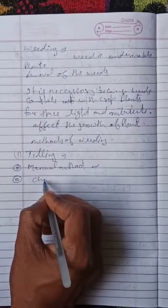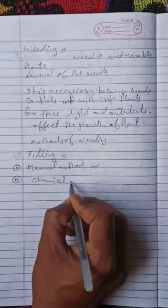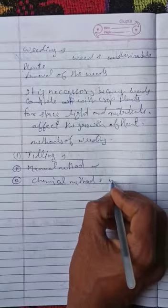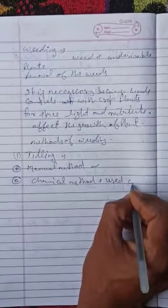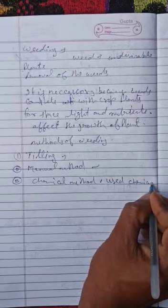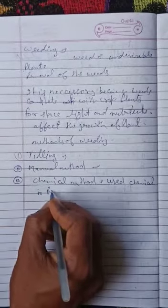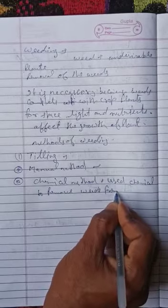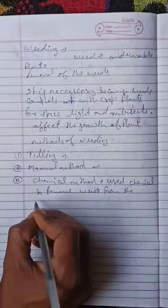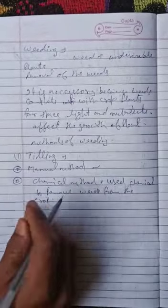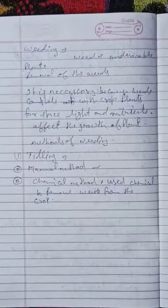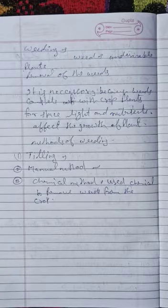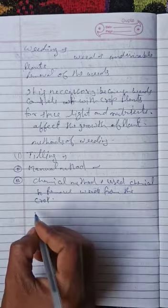Chemical method. Used chemical to remove weeds from the field, from the crop field. Weeds को remove या control करने के लिए chemicals use किए जाते हैं.